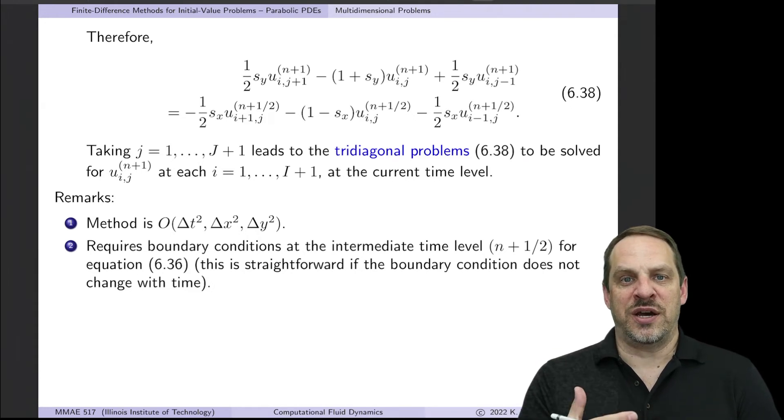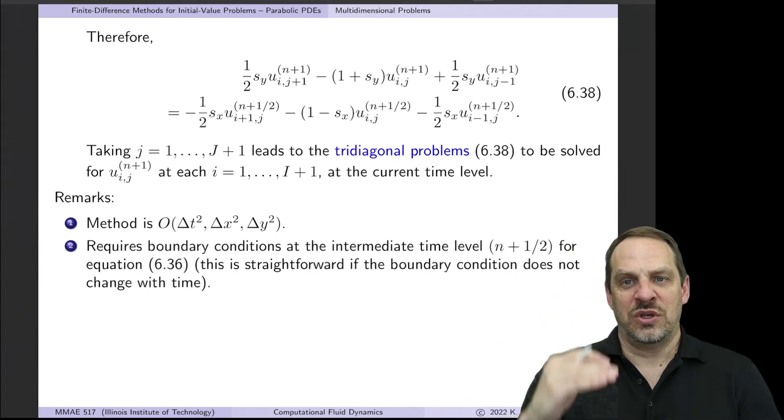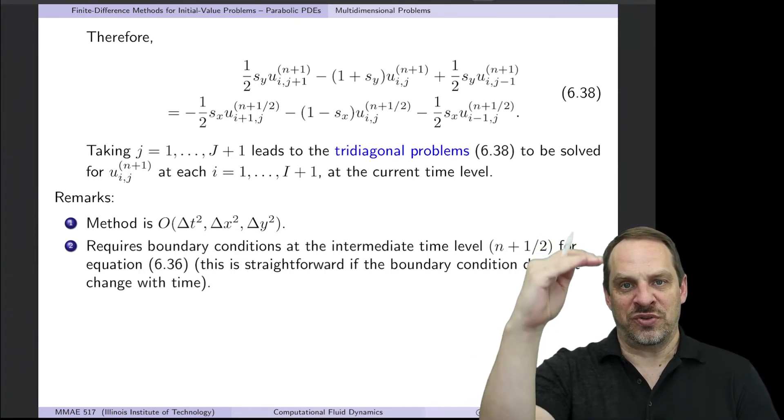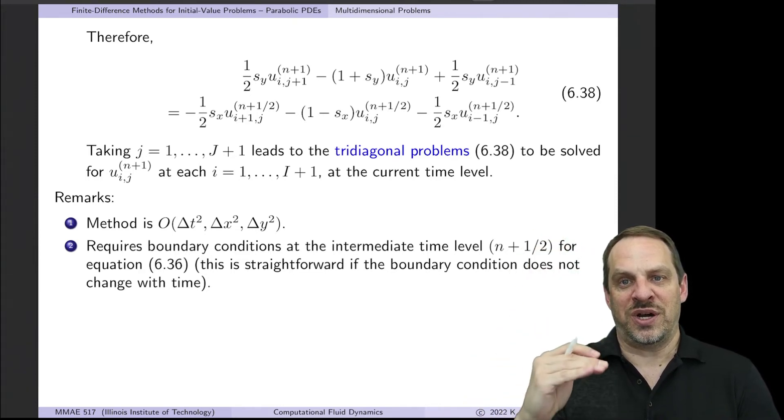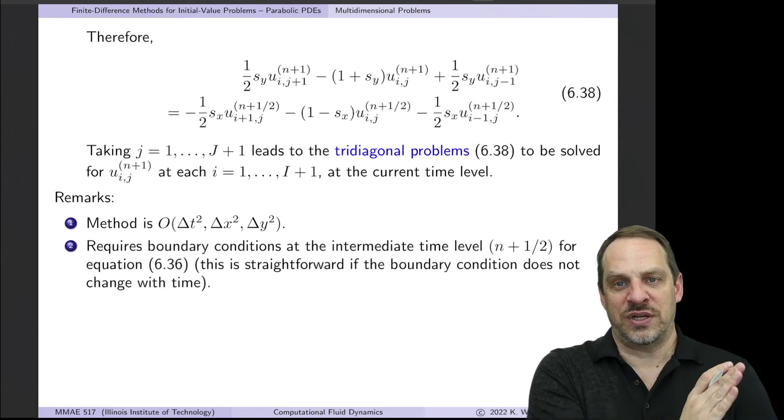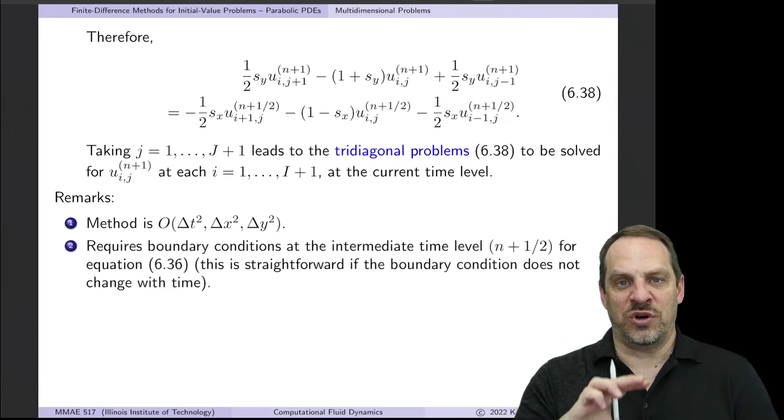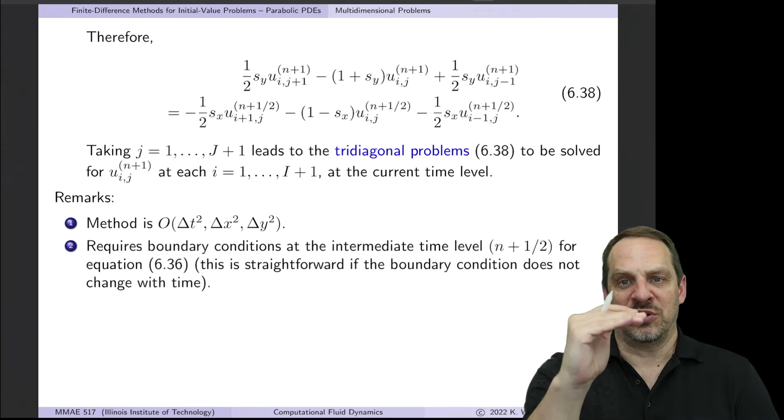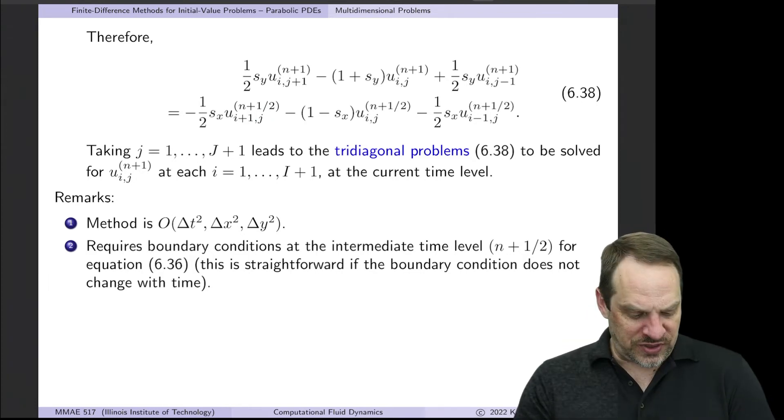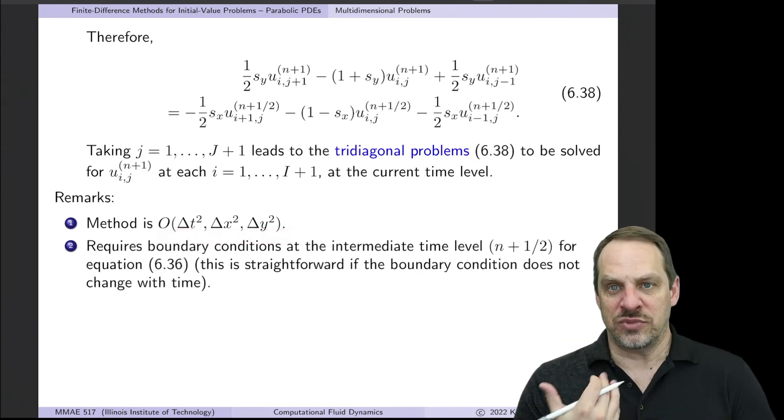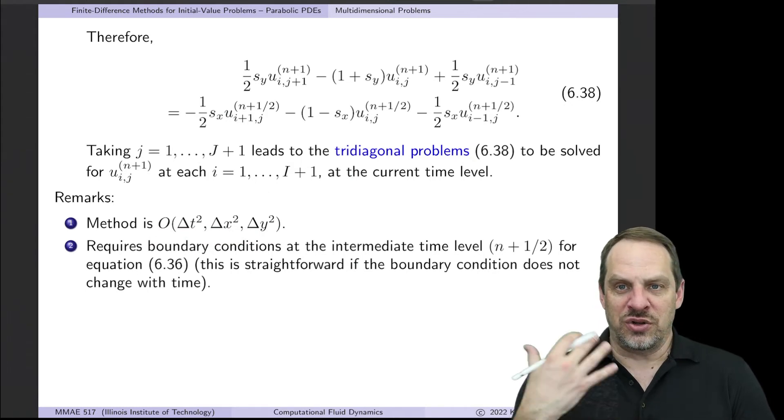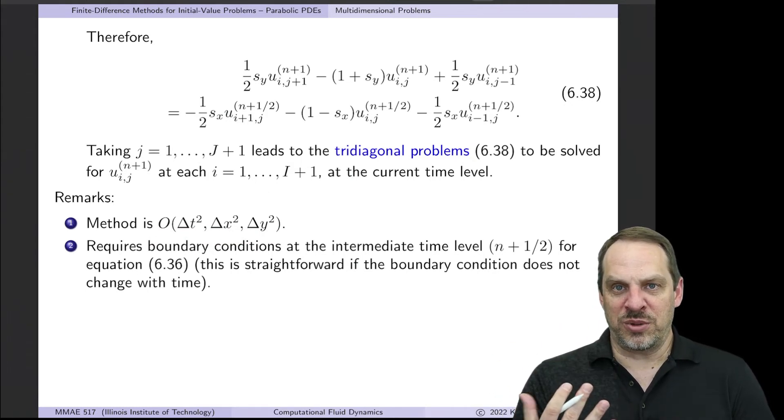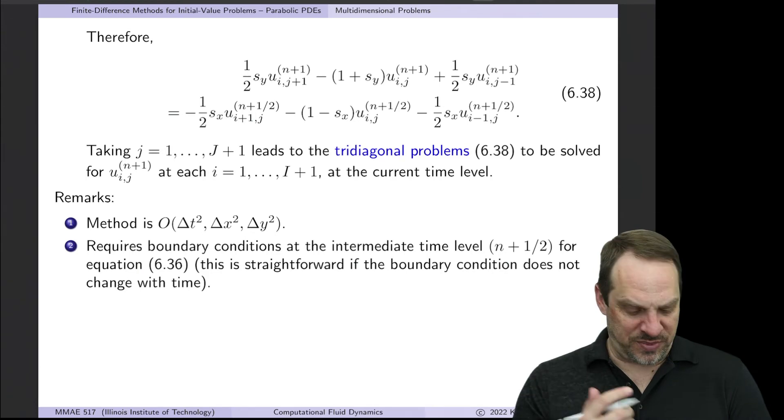So very similar to ADI applied to elliptic equations. We have a whole bunch of Thomas calls to solve the tridiagonal problems for constant y lines and then constant x lines. And then that completes one full time step. But we're doing it in two intermediate steps from n to n plus a half, n plus a half to n plus 1 to complete the time step. So this is second order accurate in both space and time. So that's good. We're happy with that. It also gives us the tridiagonal problems, which we love because we love the Thomas algorithm.